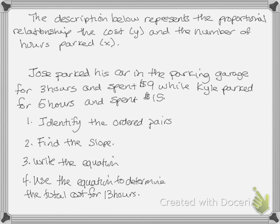Our last example is from a description representing a proportional relationship between the cost y and the number of hours parked x. Jose parked his car for 3 hours and spent $9, while Kyle parked for 5 hours and spent $15. The first thing we do is identify the ordered pairs. Jose's ordered pair is (3, 9) and Kyle's ordered pair is (5, 15).